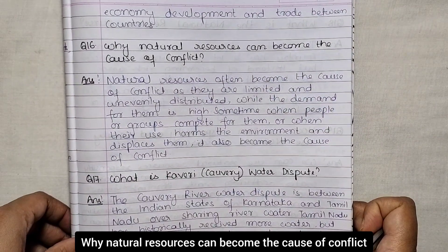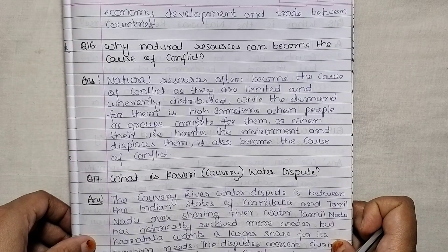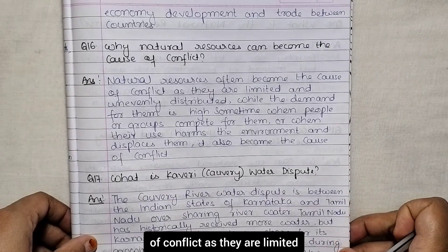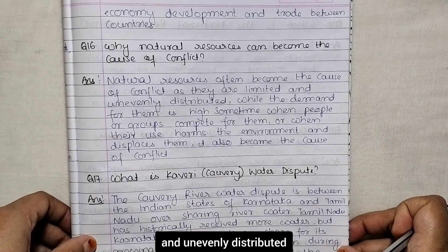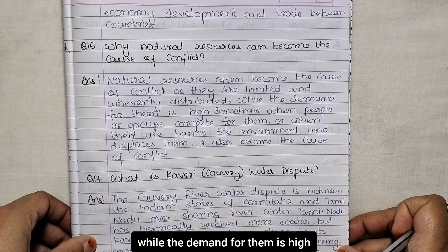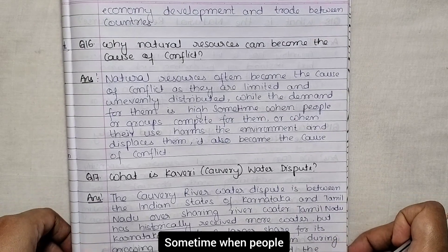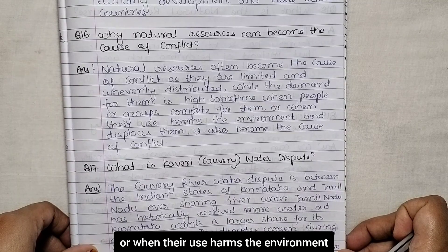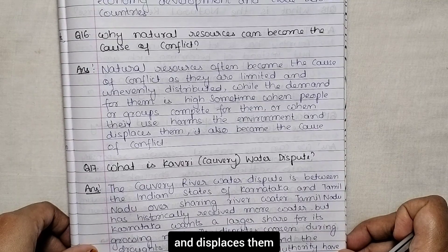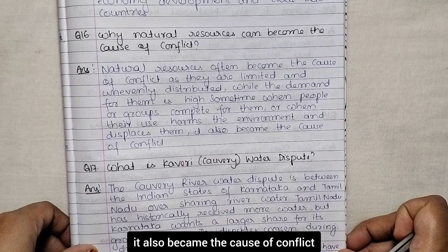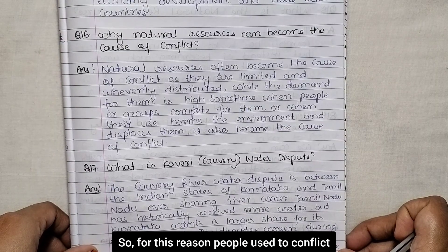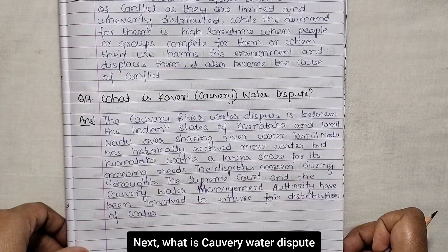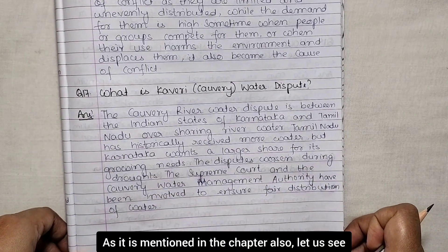Next: why can natural resources become a cause of conflict? Natural resources often become a cause of conflict because they are limited and unevenly distributed while demand for them is high. When people or groups compete for them, or when their use harms the environment and displaces communities, it also becomes a cause of conflict.